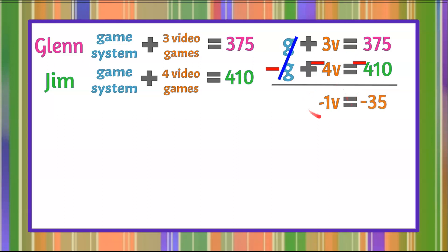I don't want to know what negative 1v equals. I want to know what positive 1v is equal to. So I'm going to divide both sides by the coefficient negative 1. Negative 1 divided by itself is positive 1, leaving me v, or 1v. And that is equal to negative 35 divided by negative 1, which is 35. So that tells me that the cost of one video game is $35.